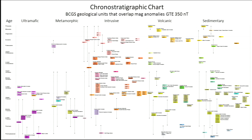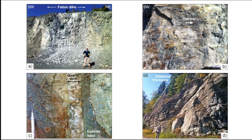We took that geology and tidied things up in a different way to understand which could be our possible sources of magnetic anomalies. We created a chronostratigraphic chart, which is also included in the poster. And we went to the field, which was critical in order to understand what these lineaments could represent — whether they would be real fault and fracture arrays.